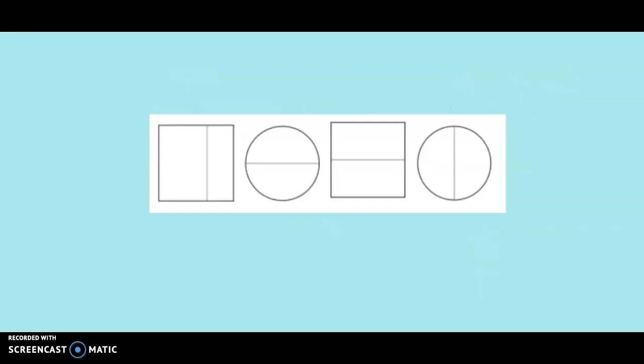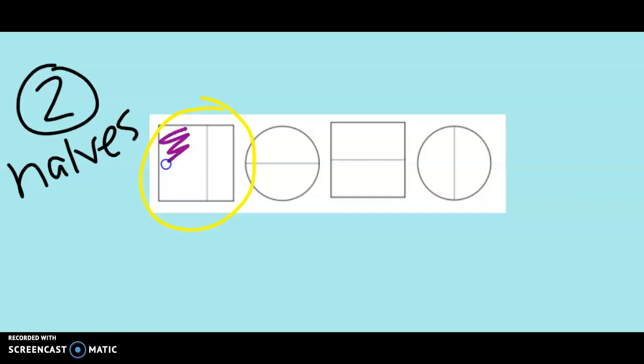Let's look at these activities. In this activity, you will see there are four shapes, and they are all in two pieces, which we call halves. But one of these is not in equal pieces. Do you spot which one does not have equal pieces? I think you're right. This one here does not have equal pieces. The left side is so much bigger than the little right side. So this one does not have equal pieces, and we cannot use it to represent halves.